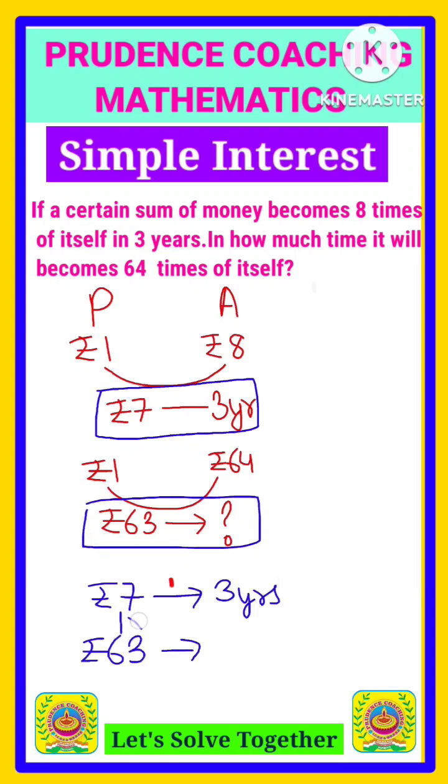So if you observe, seven into nine will get 63, that means the interest is becoming nine times. So here on the left hand side we have multiplied with nine, so similarly we will do with the right hand side. So three into nine is 27. So after 27 years it will become 63 times. You can use unitary method as well. So this is your final answer.